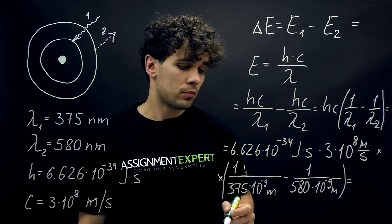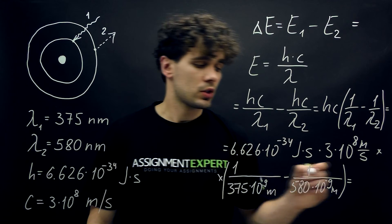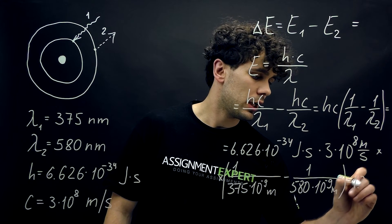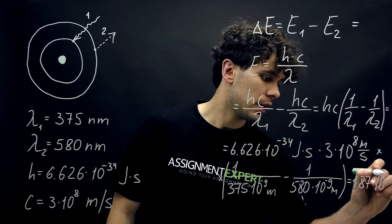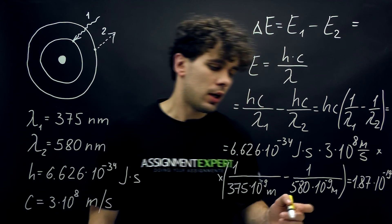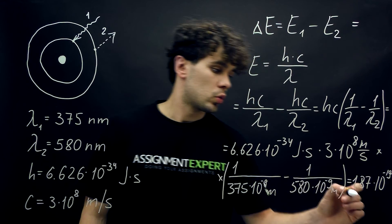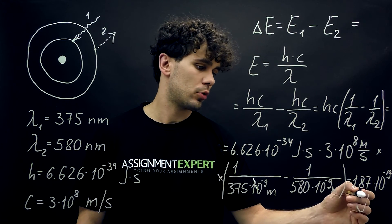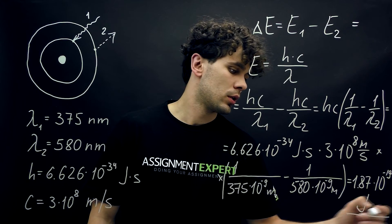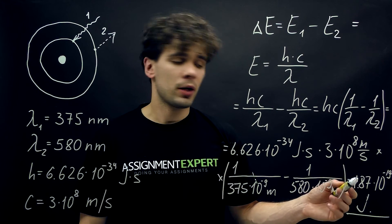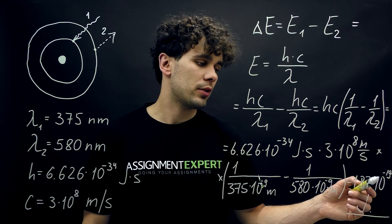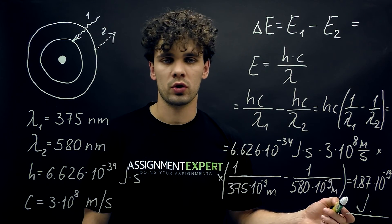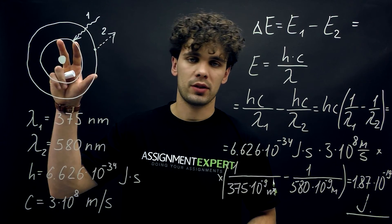Okay, so all this gives us 1.87 times 10 to the negative 19th, and the unit is joules because here we cancel out seconds and meters, so we're left with joules. So here is our answer: 1.87 times 10 to the negative 19th joules, the net energy absorbed by this atom.